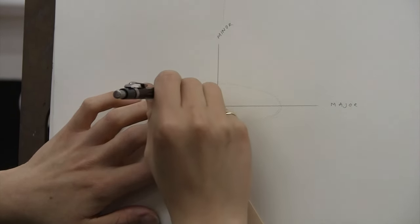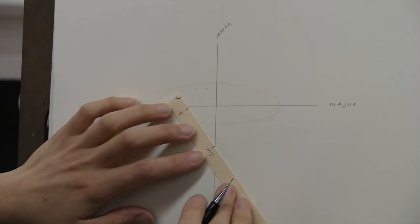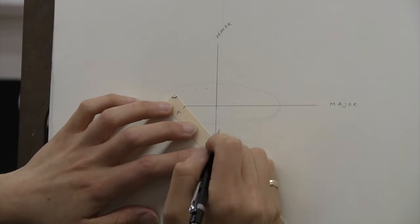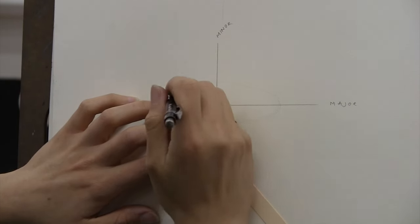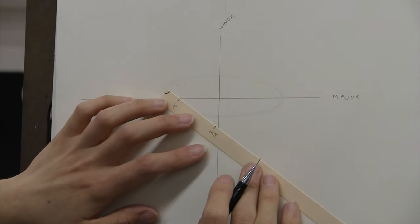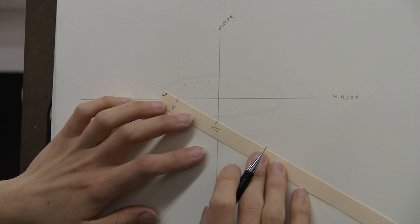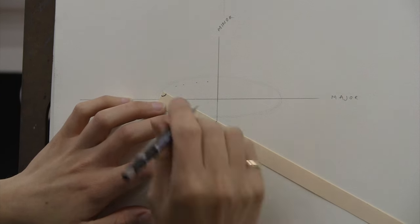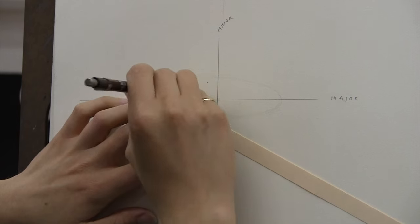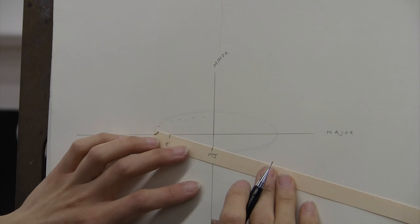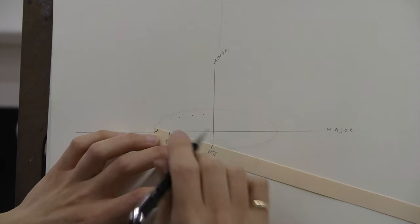So as I rotate the paper, I'm always lining up the minor and the major. The minor goes on the major, the major goes on the minor. Minor on the major, major on the minor.